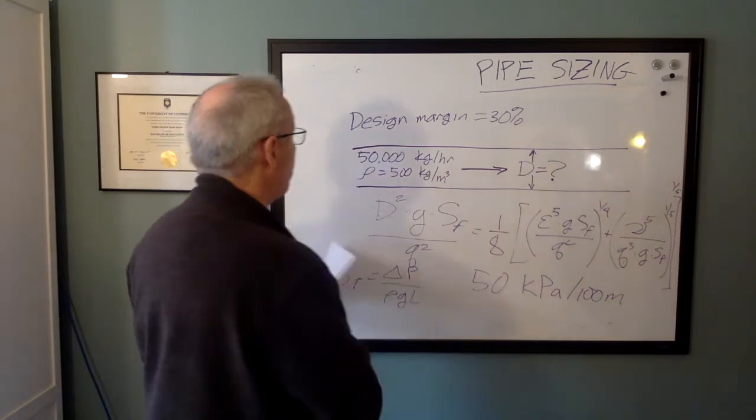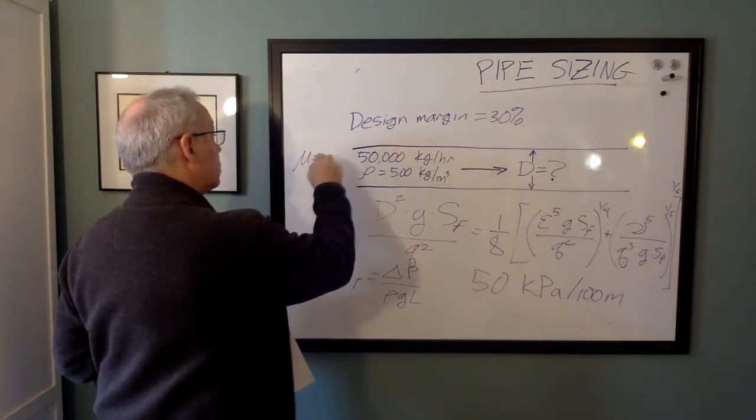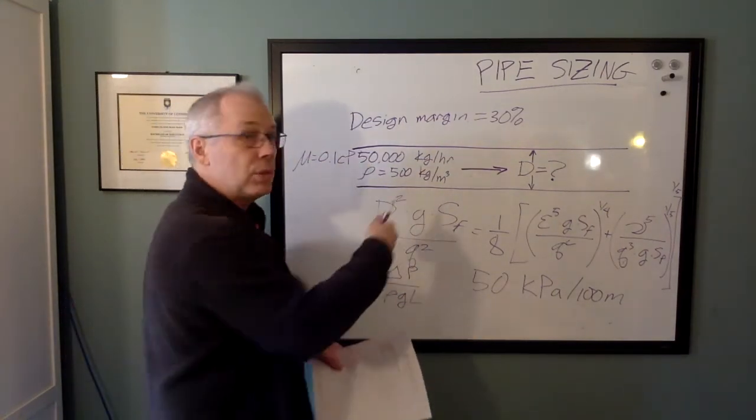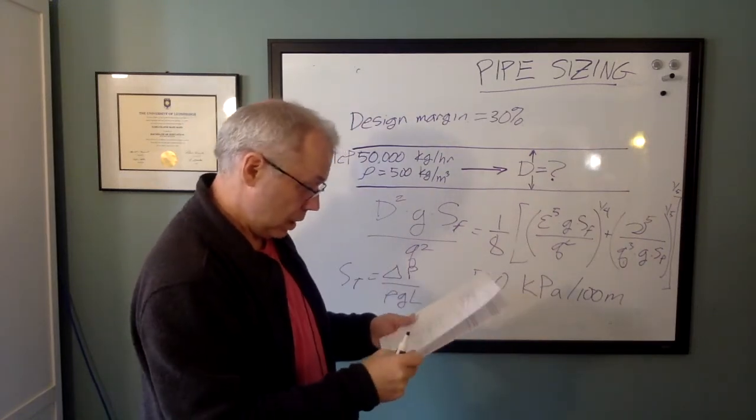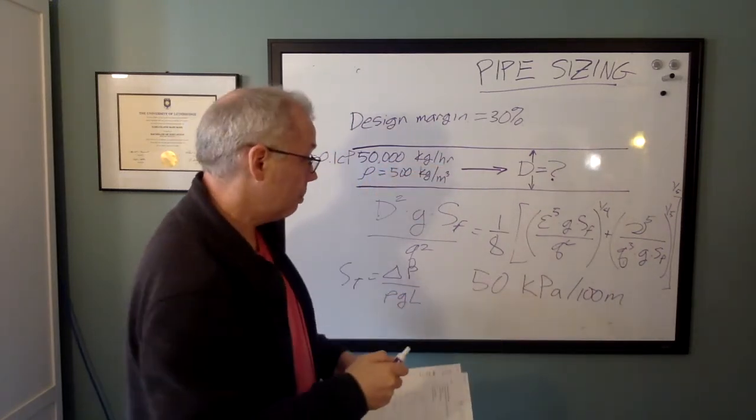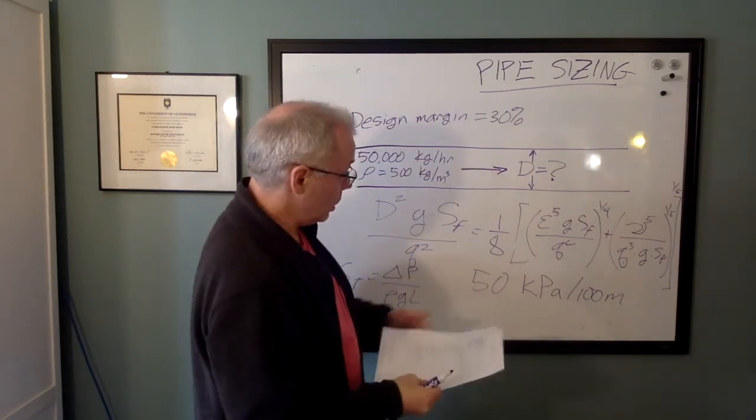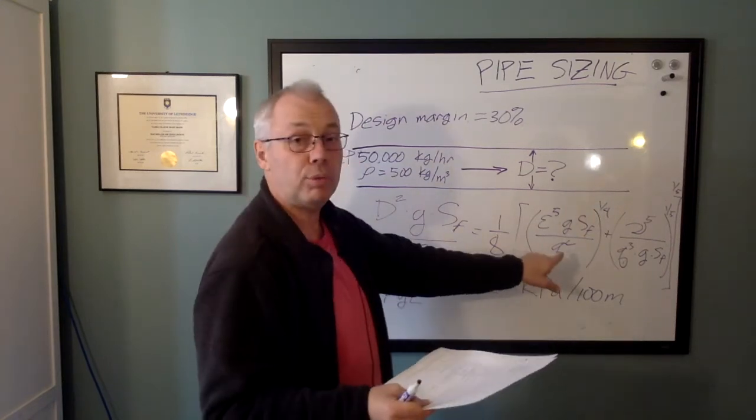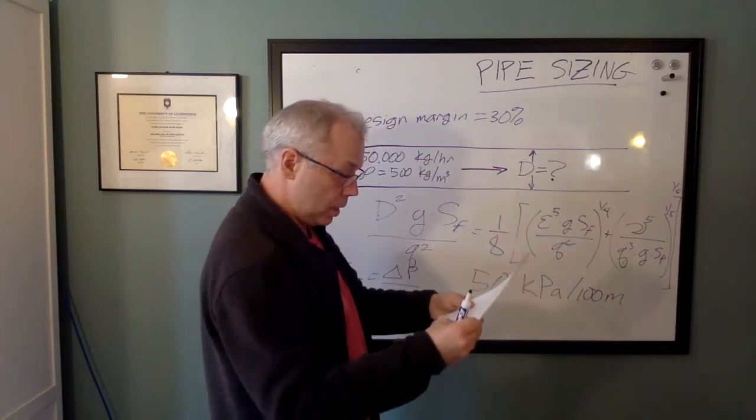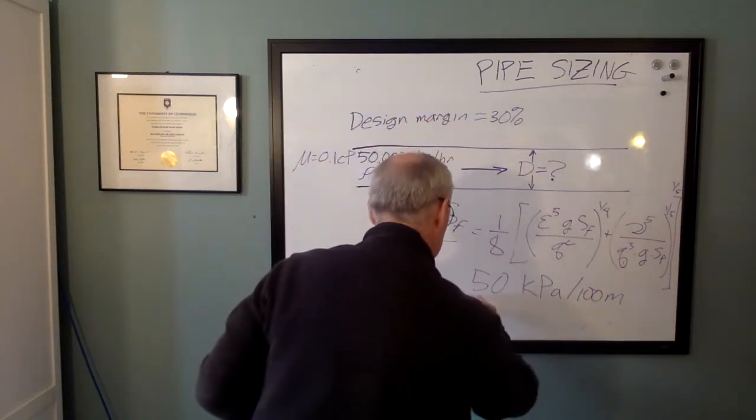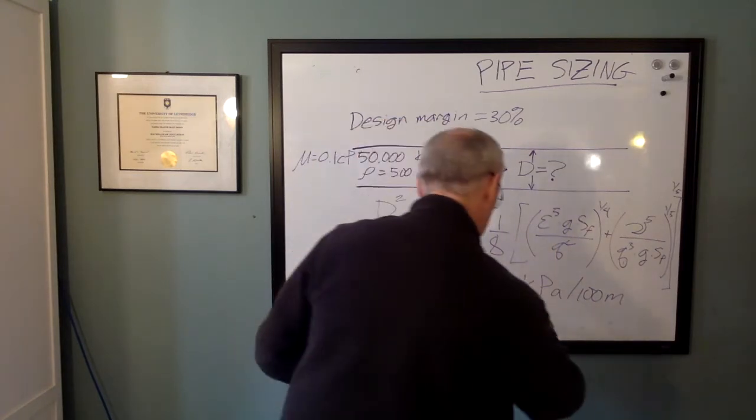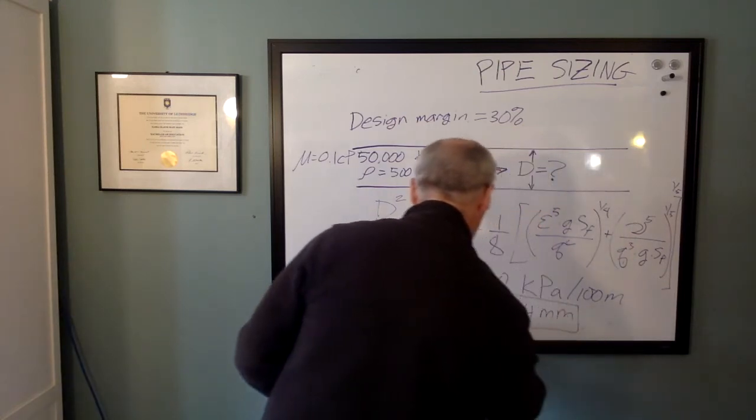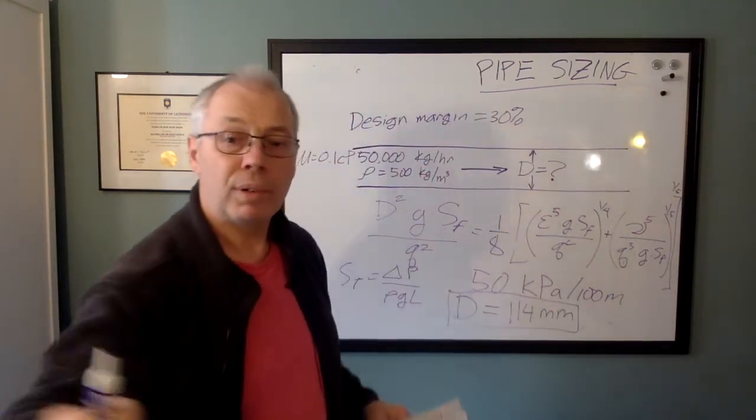Our fluid liquid propane has a viscosity of 0.1 centipoise, so we divide that by the density and we can get the kinematic viscosity. And now we can just crunch through the math. And what we get using this criteria, 50 kPa per 100 meters and that nasty formula, is in one shot we can calculate that we need a pipe diameter of 114 millimeters.